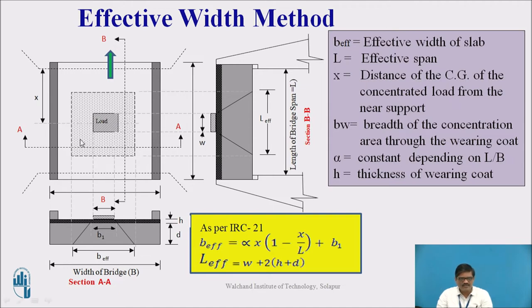For example, here you see this load is placed exactly at the center. Therefore, the distance from the nearest support will be the same, either I consider the top support or bottom support. The distance is going to remain same, that is x. But in case of the eccentric load, we have to find out the distance from the nearest support. That we call it as x.